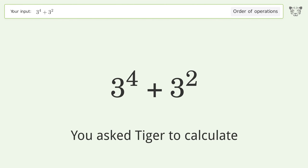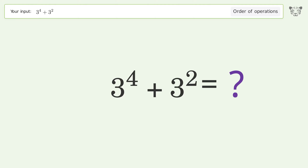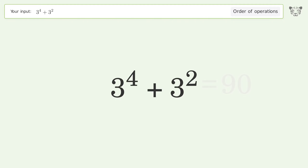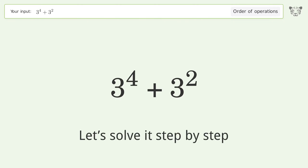You asked Tiger to calculate. This deals with the order of operations — the final result is 90. Let's solve it step by step.